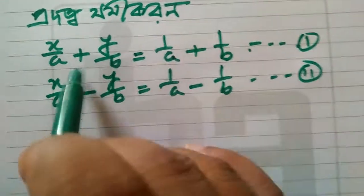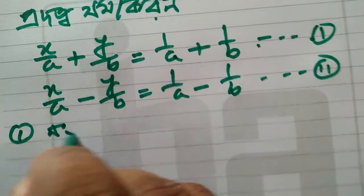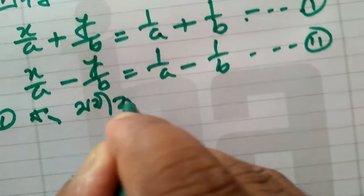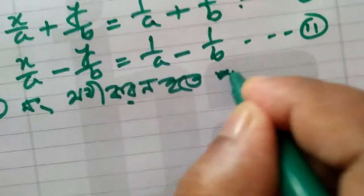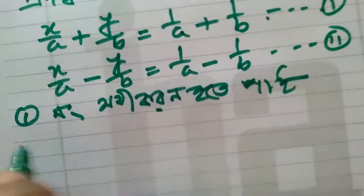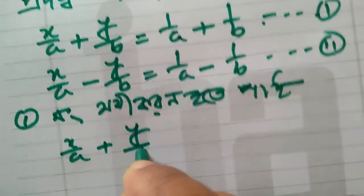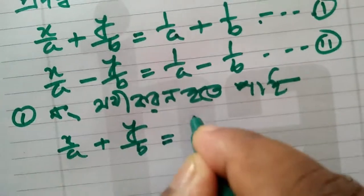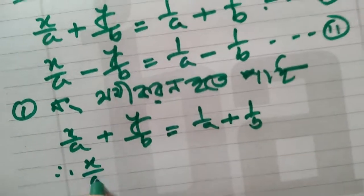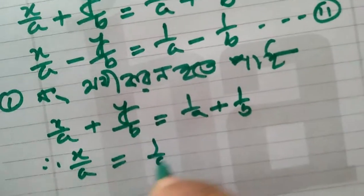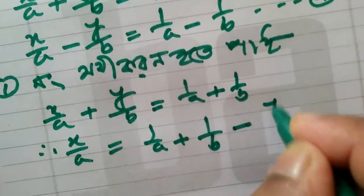From equation 2: x by a minus y by b is equal to 1 by a minus 1 by b. From equation 1: x by a plus y by b is equal to 1 by a plus 1 by b, so x by a is equal to 1 by a plus 1 by b minus y by b.